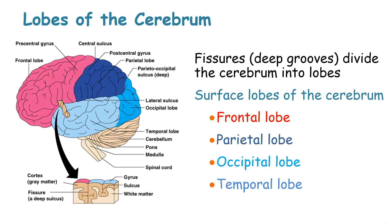These deep groups of fissures of the cerebrum divide it into what are known as lobes. The surface lobes of the cerebrum include the frontal lobe, the parietal lobe, the occipital lobe and the temporal lobe.